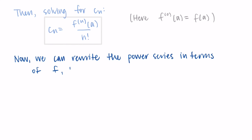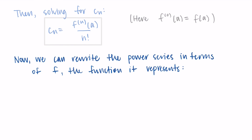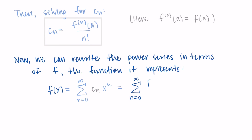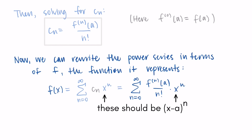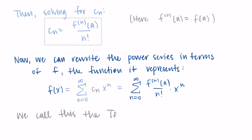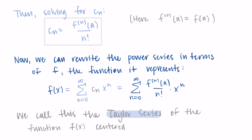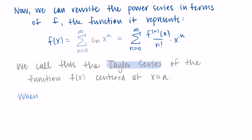We have found a formula for our coefficients, so we can replace c sub n in the power series formula. This gives us the sum from n equals zero to infinity of the nth derivative of f at a, divided by n factorial, times (x minus a) to the n. When we write a power series in terms of the function we're representing this way, we call it the Taylor series of f centered at x equals a.